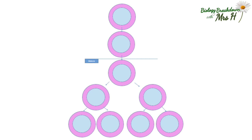Meiosis occurs in the testes of a male and the ovaries of a female. In meiosis, when the cell is about to divide, the DNA becomes visible as chromosomes just like it does in mitosis. This is called a parent cell — again, it has a full set of chromosomes. We say the cell is diploid, and just before meiosis occurs, the DNA is replicated so each chromosome is copied. The cell will contain two identical copies of all of the chromosomes.